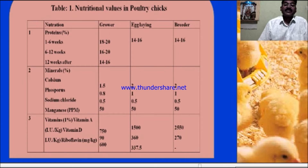The mineral requirements — particularly calcium, phosphorus, sodium chloride, and magnesium — at early grower stages need a lesser amount, particularly 1.5 percent calcium. But for egg-laying and breeder stages, a greater amount of calcium is required, added at 2 percent of the total feed.